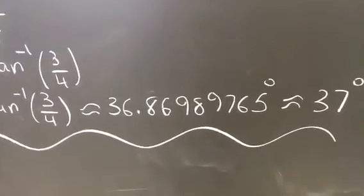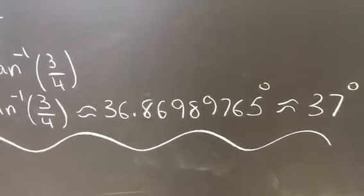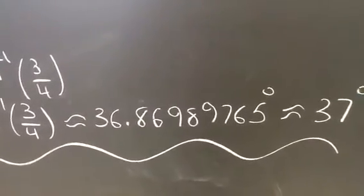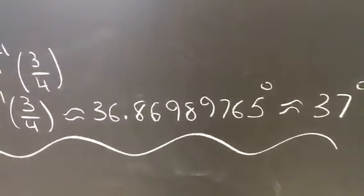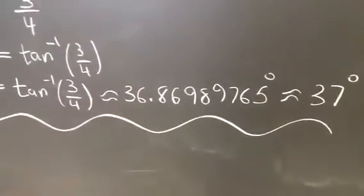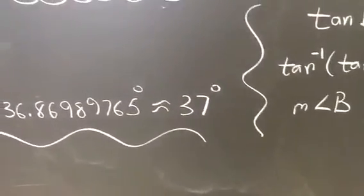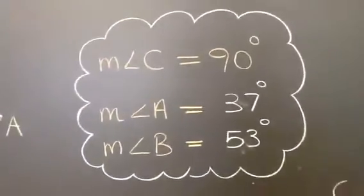What we're going to do in this class is we're going to round to the whole degree. So because the decimal point, the 8, is larger than a 5, I am justified in simply rounding this to a whole number, 37 degrees. And so this makes angle A 37 degrees.